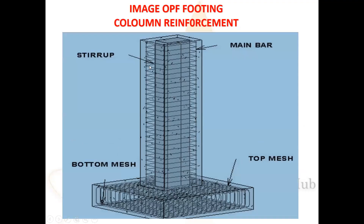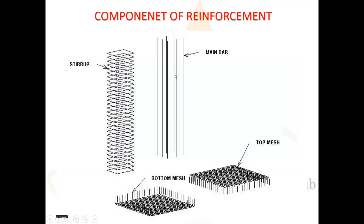This is the image of a footing column reinforcement. It shows the top mesh, bottom mesh, main bars, and stirrups. The components of column and footing reinforcement are: bottom mesh, top mesh, main bars, and stirrups.